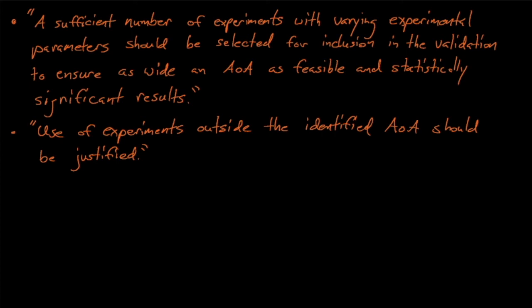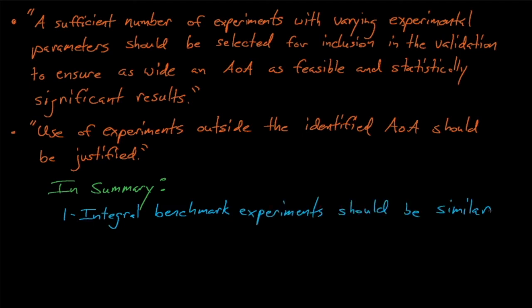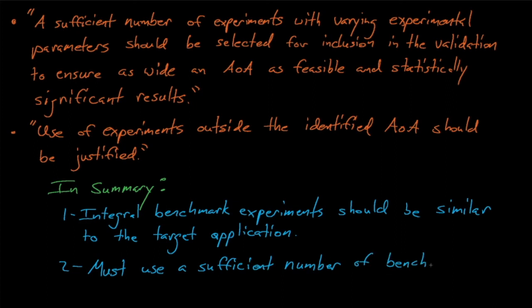And so to summarize the 6698 NUREG, when we perform validation studies, we will want to include benchmark experiments that are neutronically similar to our target application, and also to use enough experiments to provide statistically significant predictions.